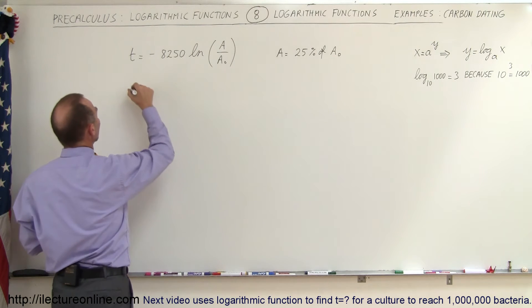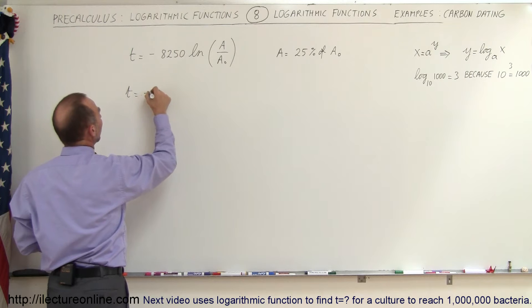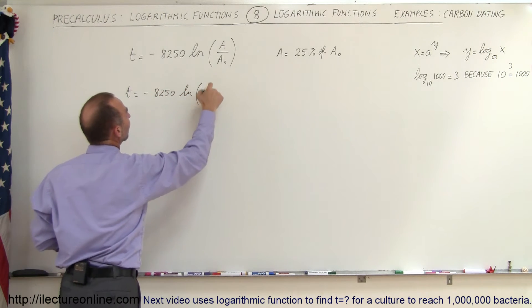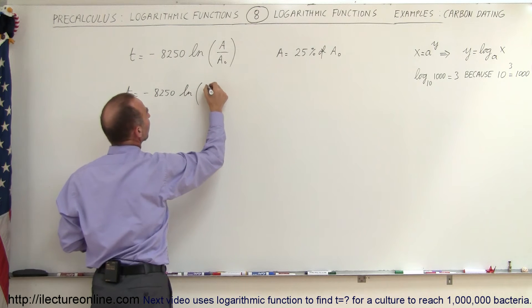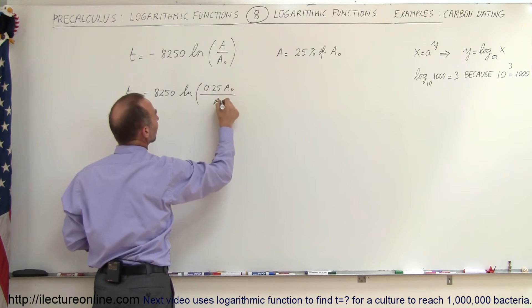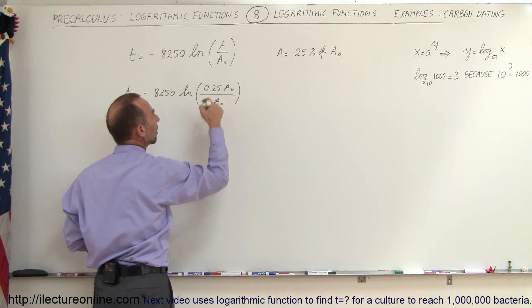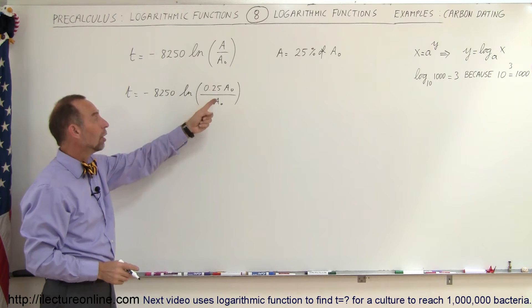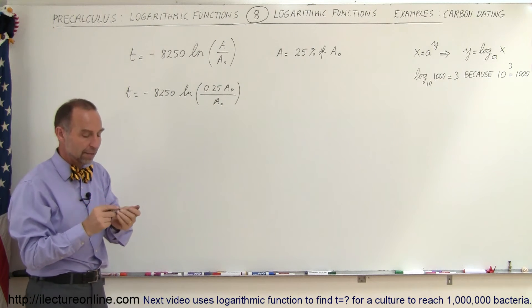So to find the time we can then say that the time is equal to minus 8,250 times the natural log of A is now going to be 0.25 times A sub-naught divided by A sub-naught. So what we're saying here is that the quantity of carbon-14 that we have in our current sample is only one quarter of what it was when it was first made.